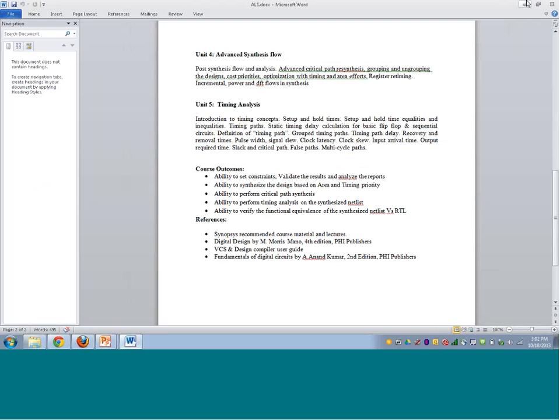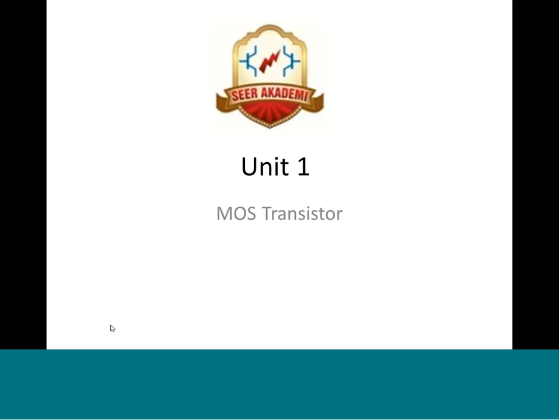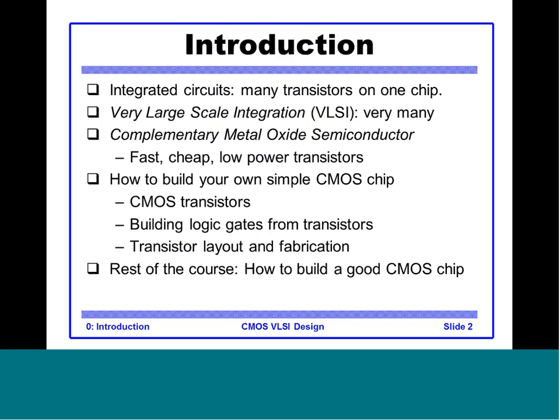Let us start with Unit 1. We will assume everyone is familiar with the basic working of a MOS transistor, but we will revisit it to see how it works — mostly as a switch, since that is the functionality used most in digital design. We are looking at integrated circuits with billions of transistors on a single chip. The most popular technique for manufacturing VLSI circuits is Complementary Metal Oxide Semiconductor, or CMOS.